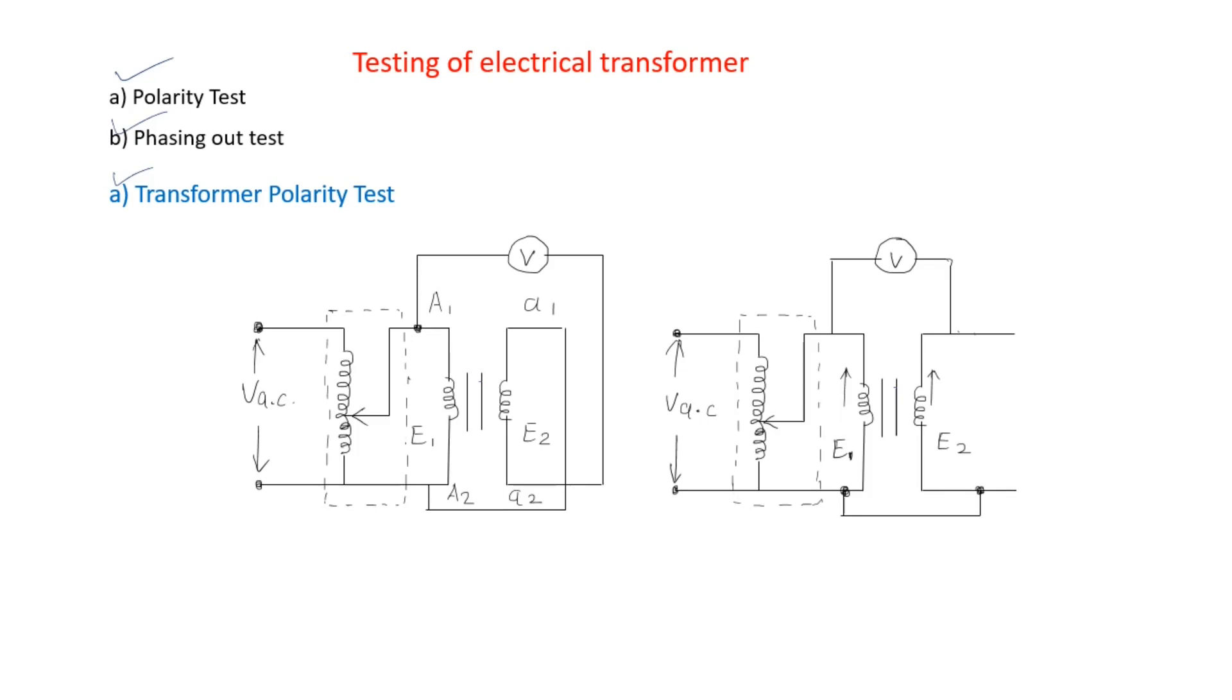The HV and LV terminals of a single phase and three phase transformer should always be marked as shown in this figure. One point is that whenever high voltage or low voltage terminals are there, these terminals should always be marked for single phase and three phase transformer.